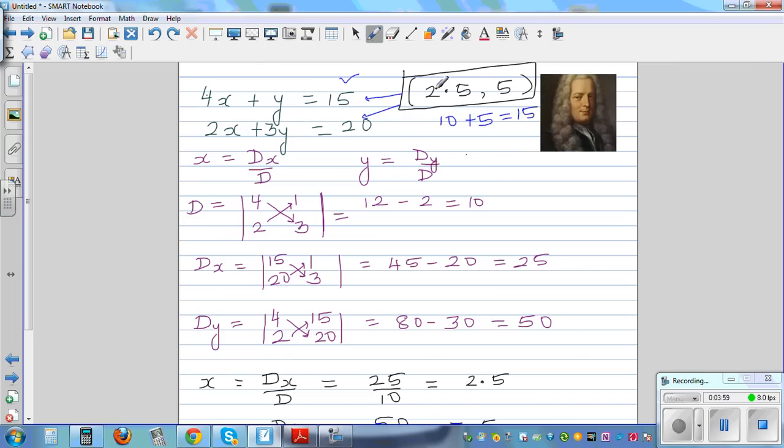So let's put it here. 2 times 2.5, which is 5, plus 3 times 5 is 15, is equal to 20. So what is this system of equations telling me? That this is the only value that satisfies both these equations.